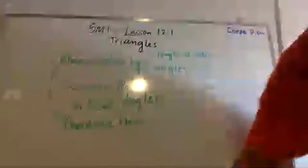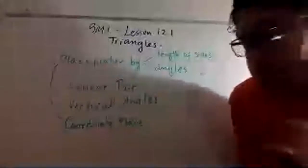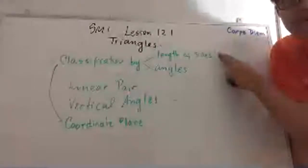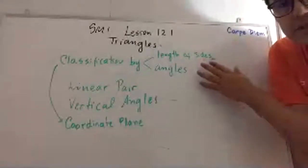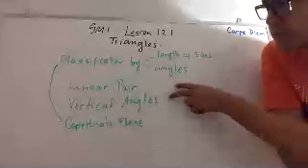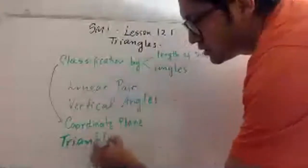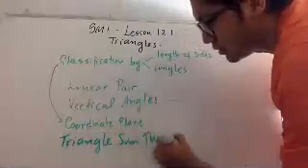Let's begin. First, we're going to review classification of triangles: by the length of sides and by the angle. Then we're going to talk about angle relationships. We also need to cover the triangle sum theorem today.